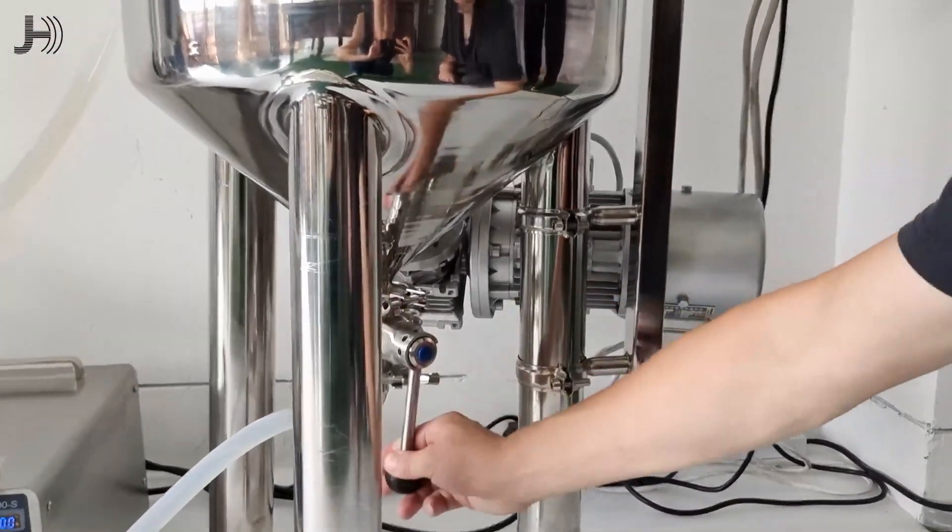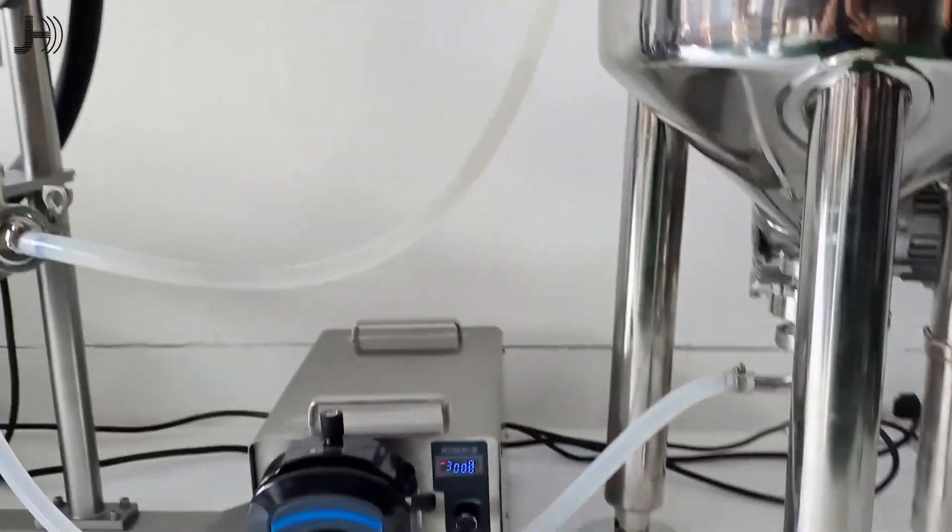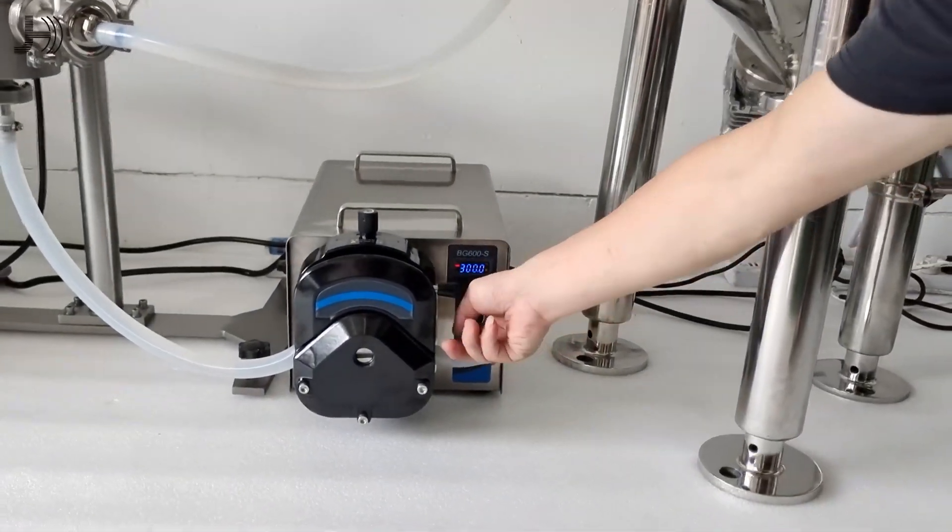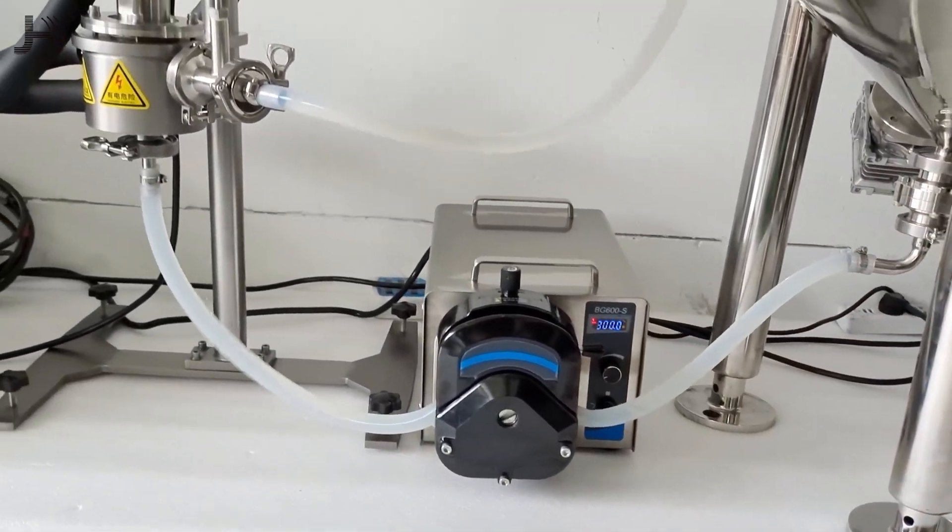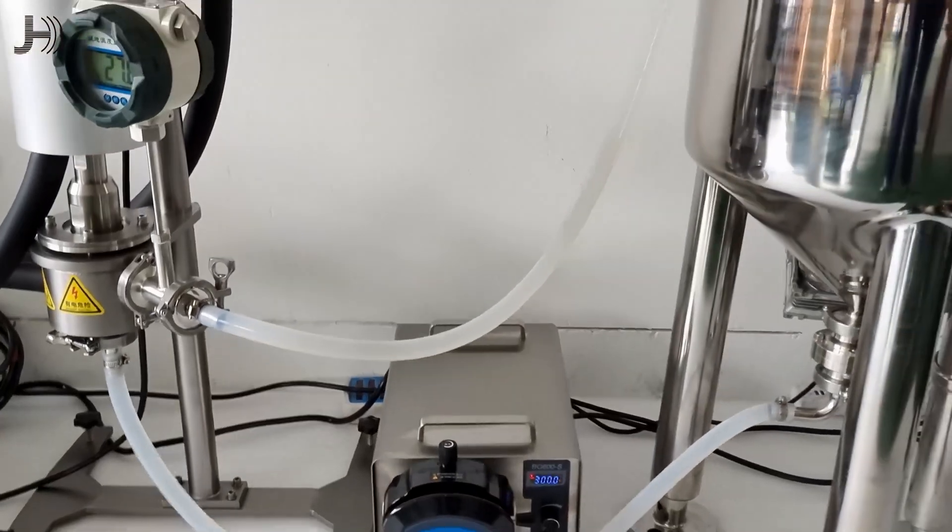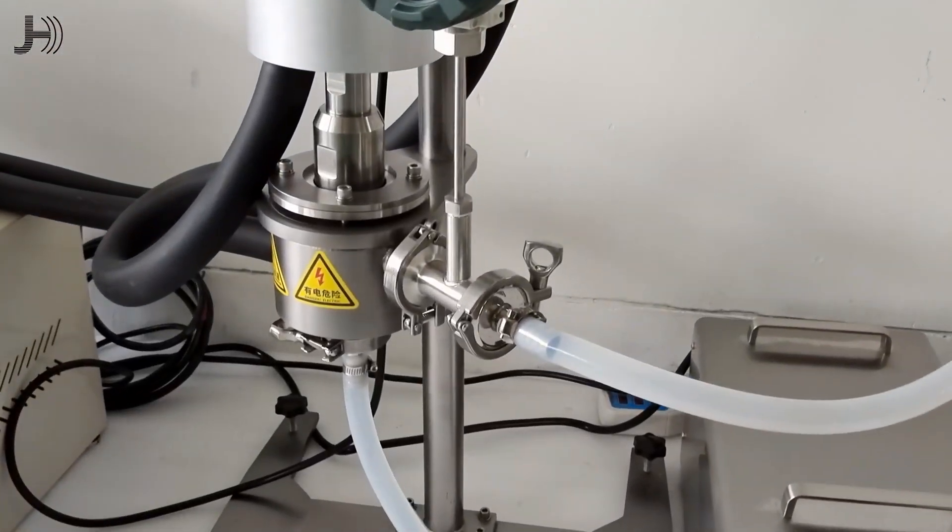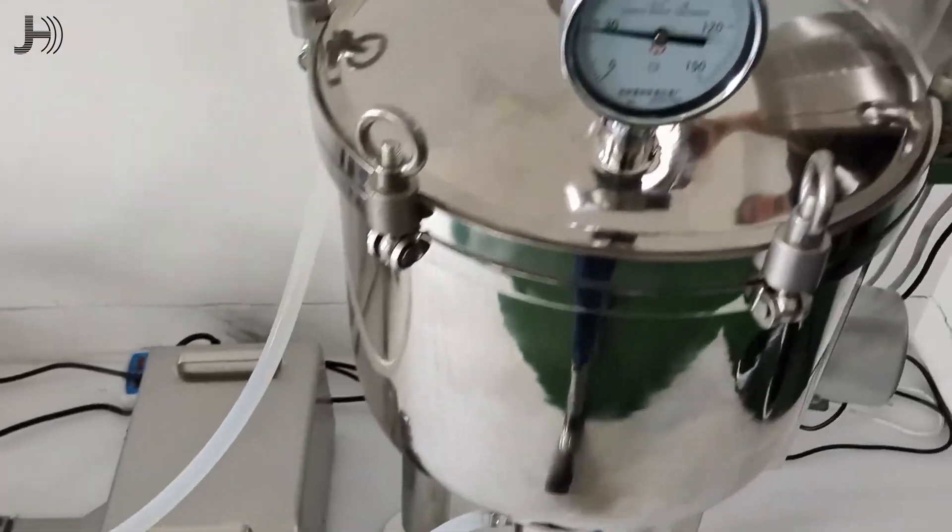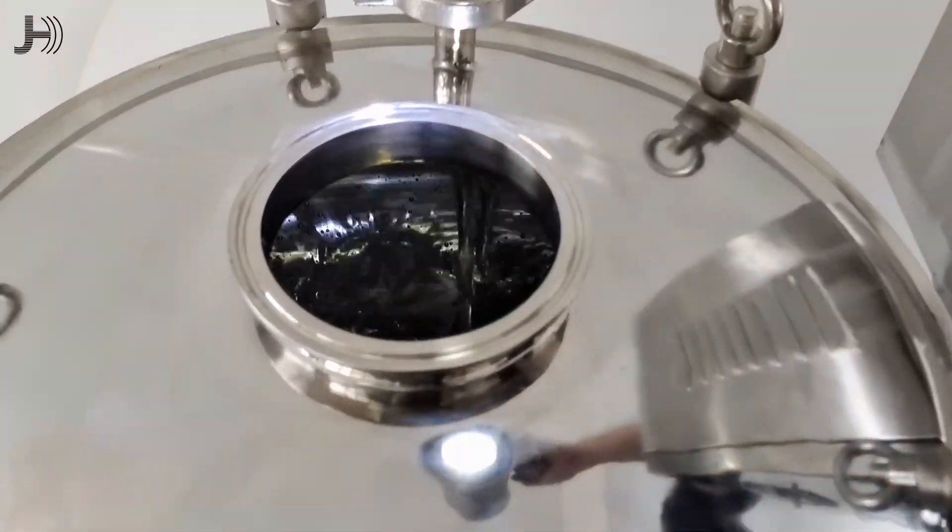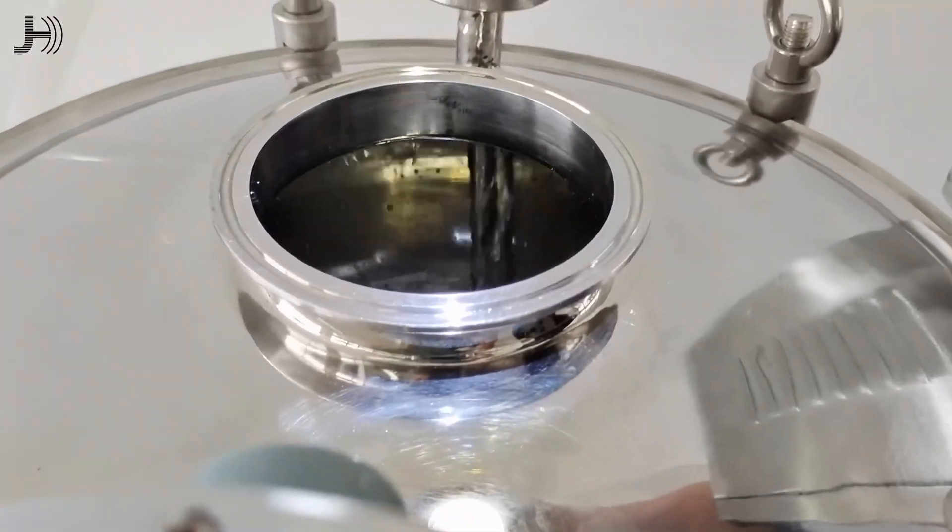Let's open the valve and open the pump. At this time, the liquid flowed between the flow cell and the mixing tank. You can see here.